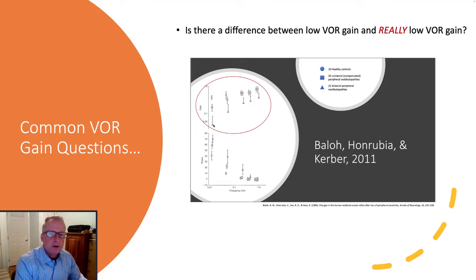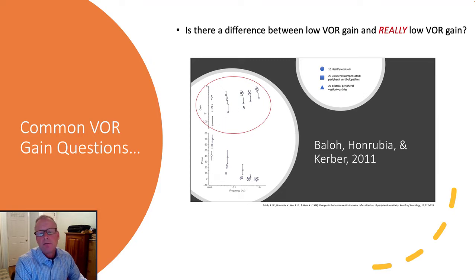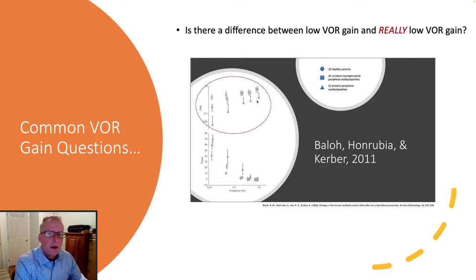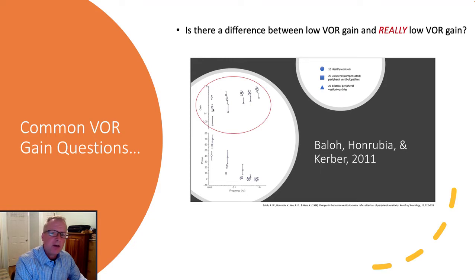Bilateral vestibulopathies will produce VOR response gains that are actually quite low. And if you lose one ear — a unilateral loss — you lose about 50% of your system. Those gain values appear here.